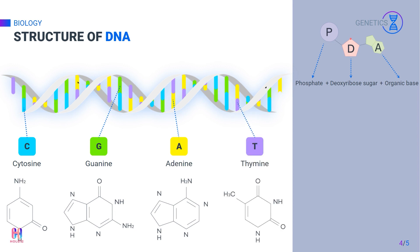There are four different nitrogenous bases: these are adenine, guanine, cytosine, and thymine. These bases are often known simply as A, G, C, and T.